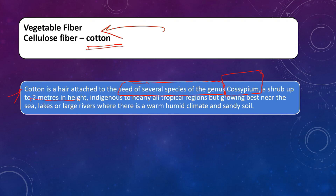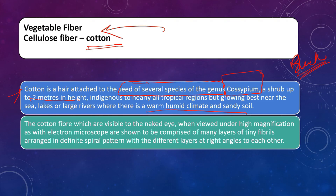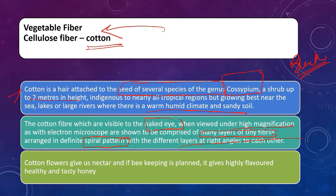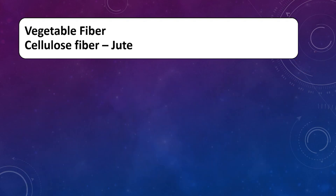Another characteristic of cotton fiber: when you watch the cotton fiber with the naked eye, it seems like a very simple fiber. But when we magnify it, it is seen to actually be layers of many tiny fibrils that originate in a definite spiral pattern at right angles to each other. Another property of this vegetable cellulose fiber: cotton flowers are nectar-bearing, and if beekeeping is done nearby, it gives a highly flavored, healthy, and tasty honey.